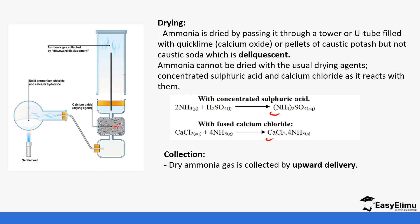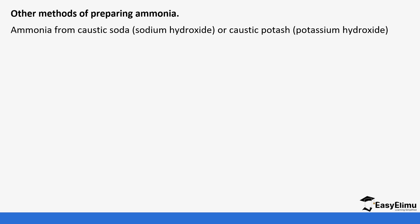For collection, ammonia is collected by upward delivery or the downward displacement of air, because it is lighter than air. We cannot use the over-water method because ammonia is very soluble in water and would dissolve.